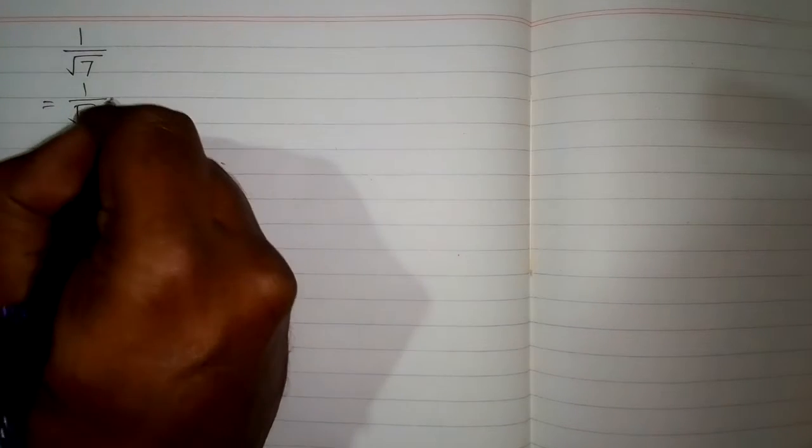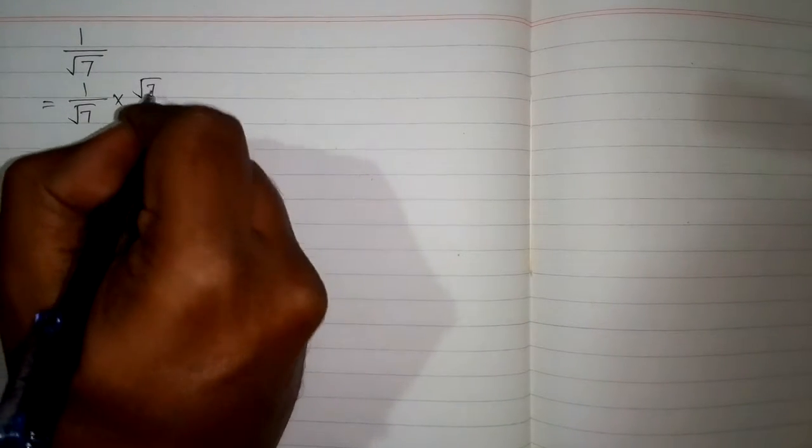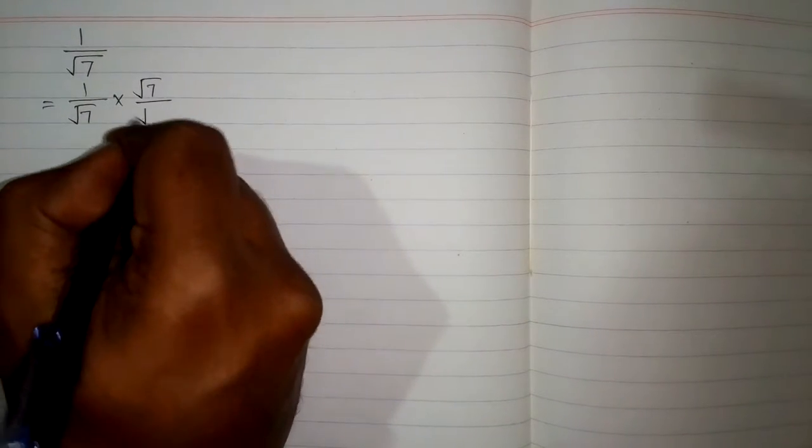In this video we will rationalize the denominator of the given fraction. Rationalization means we will remove the square root sign from the denominator. For this we have to multiply and divide this fraction by square root of 7.